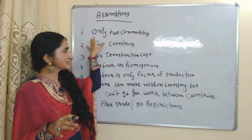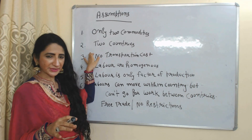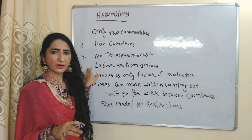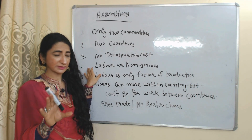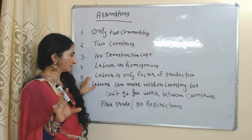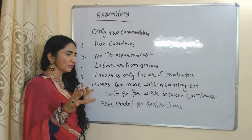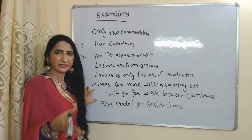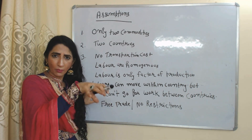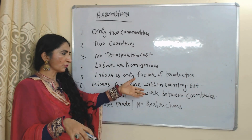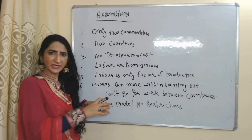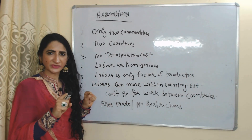Now we will see the assumptions. There are two commodities and two countries. There are no transportation costs. Labors are homogeneous, meaning all labors are the same. Labor is the only factor of production. Labor can move within a country but cannot move between countries, and there is free trade without any restrictions.